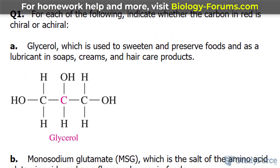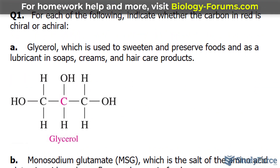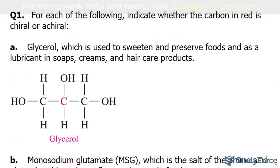With that, we should be able to answer question one. For each of the following, indicate whether the carbon in red is chiral or achiral. The first molecule is glycerol, which is used to sweeten and preserve food, and as a lubricant in soaps, creams, and hair products.